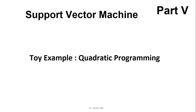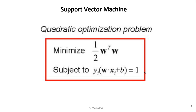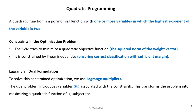Welcome to this channel. The topic of this video is Support Vector Machine — this is the fifth video on this topic. In this video, I am going to explain the toy example for quadratic programming in which we make an initial assumption about the support vectors. SVM is a quadratic optimization problem whose objective function is to minimize half the squared norm of the weight vector, subject to all points being classified correctly.